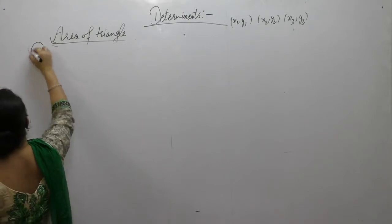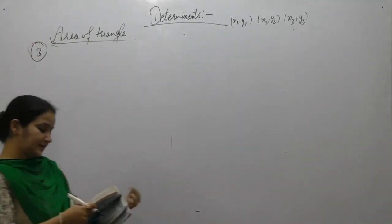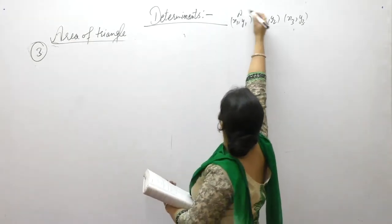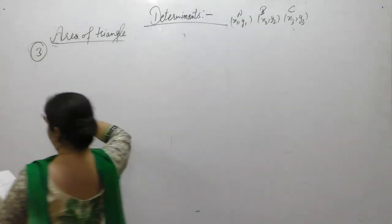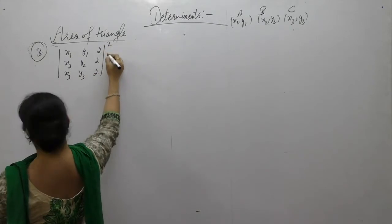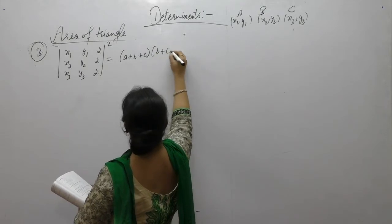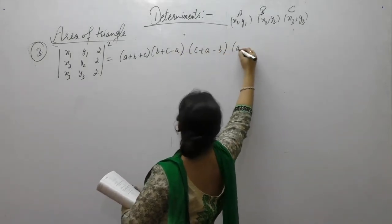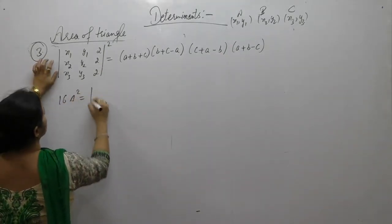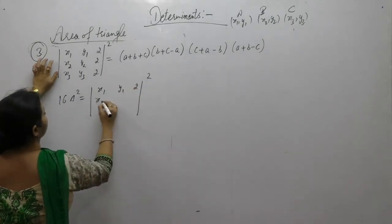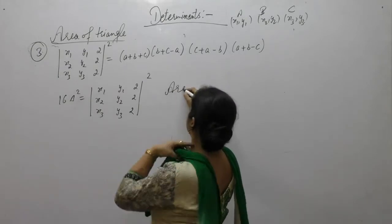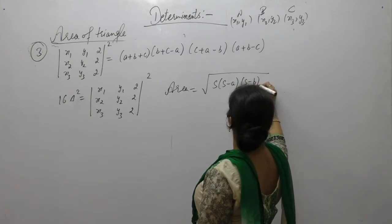Now the third one. A triangle has its three sides equal to a, b, and c. If the coordinates of the vertices are A(x1,y1), B(x2,y2), and C(x3,y3), show that the determinant with rows (x1,y1,1), (x2,y2,1), (x3,y3,1) squared equals (a+b+c)(b+c-a)(c+a-b)(a+b-c). We also have area equals √(s·(s-a)·(s-b)·(s-c)), where s is the semi-perimeter, s = (a+b+c)/2.